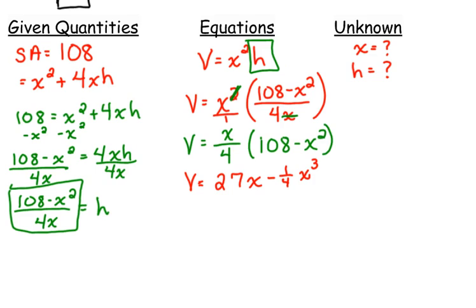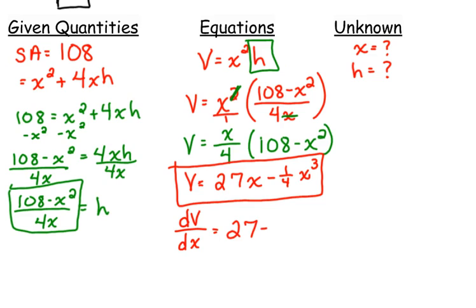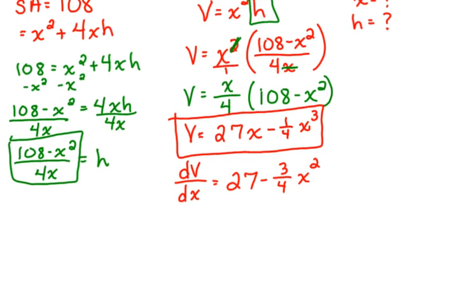So we are finally to the point. This is the equation that we are trying to maximize. We are trying to maximize volume. We finally got it in terms of one variable, so we can now take the derivative of the volume with respect to the dimension x, the side length of the base. So when we do that, we get 27 minus 3 fourths x squared. We are trying to maximize it, so how do we find maxes and mins when we have the derivative? Set it equal to zero. Those are our critical points. So we are going to set it equal to zero, and then we are going to solve it.